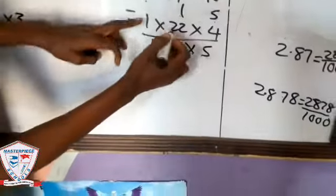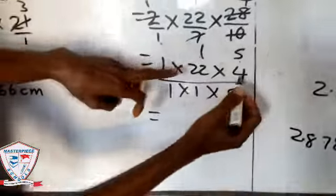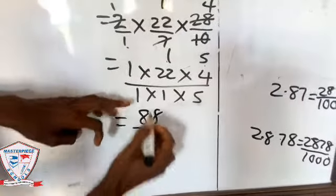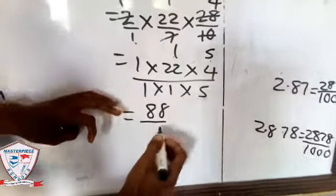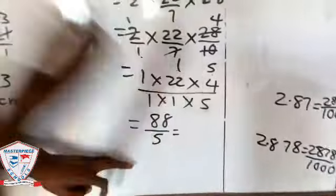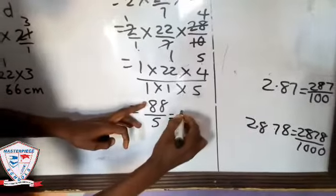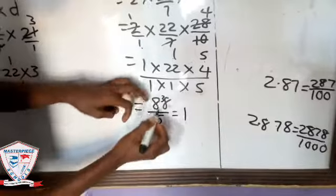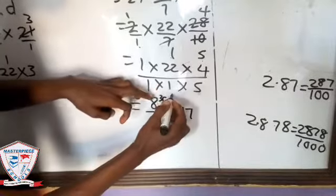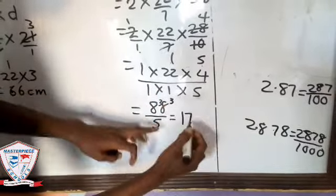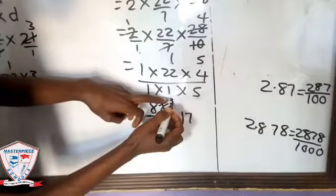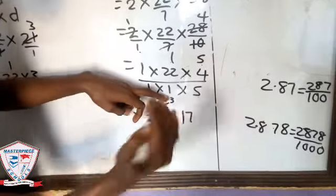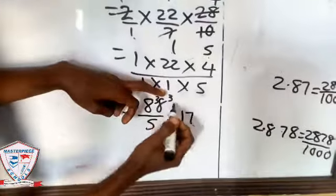You can now - that's 1 × 22 = 22, 22 × 4 gives you 88. 1 × 1 = 1, 1 × 5 - so you have 5. Now you can get your final answer. 5 in 8 is 1 remainder 3. 5 in 38 is 7 remainder 3. Can 5 go in 3? No. So put your point and zero.